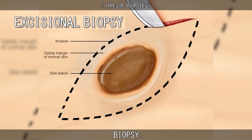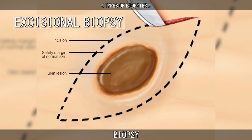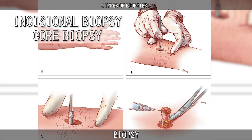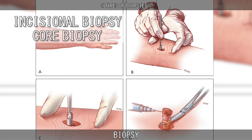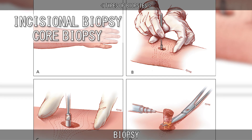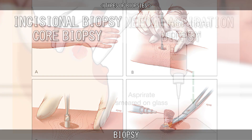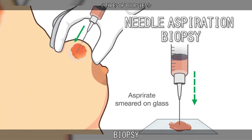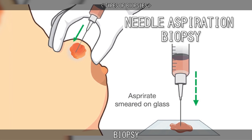When an entire lump or suspicious area is removed, the procedure is called an excisional biopsy. An incisional biopsy or core biopsy samples a portion of the abnormal tissue without attempting to remove the entire lesion or tumour. When a tissue sample or fluid is removed with a needle, the procedure is called a needle aspiration biopsy.